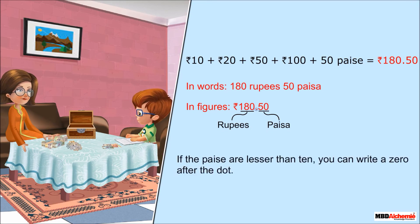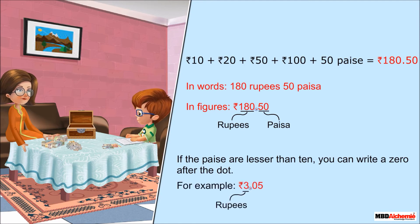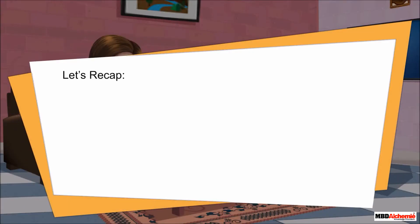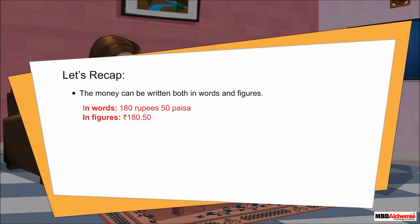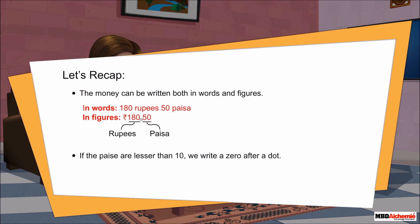Let's recap: money can be written both in words and figures. The dot separates the rupees from the paise. The number to the left of the dot shows the rupees, and the number to the right shows the paise. If the paise are lesser than 10, we write a zero after the dot — for example, three rupees five paise is written as 3.05.